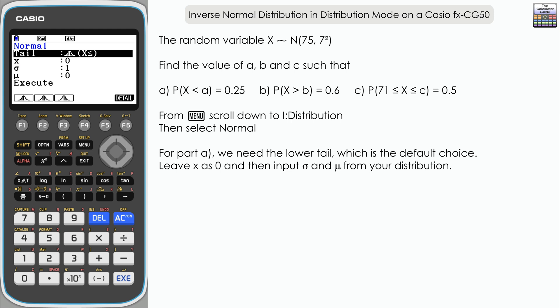Now X will actually be what we're looking for—that's going to be the value of a that we need to find. But we're going to do that once we've got the graph produced for this particular distribution, so I'm just going to leave that as zero. Let's input sigma, which is the standard deviation.